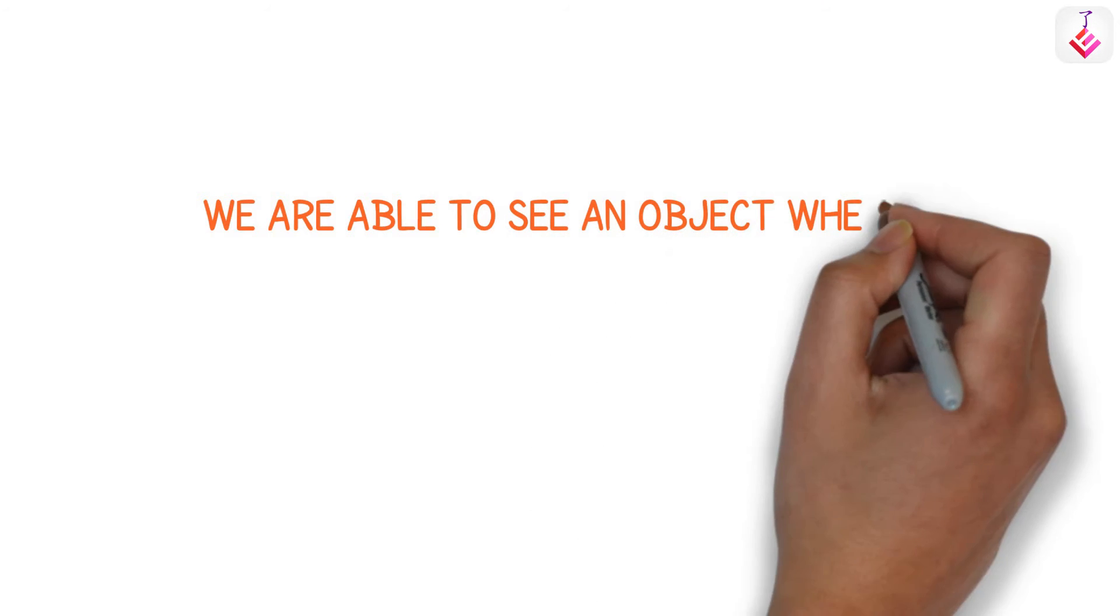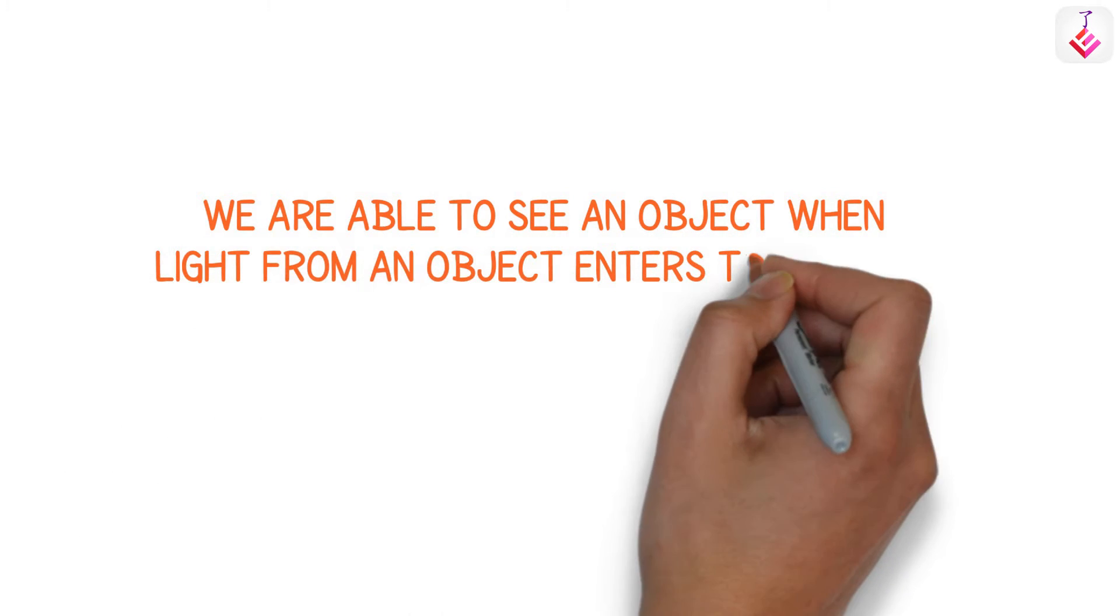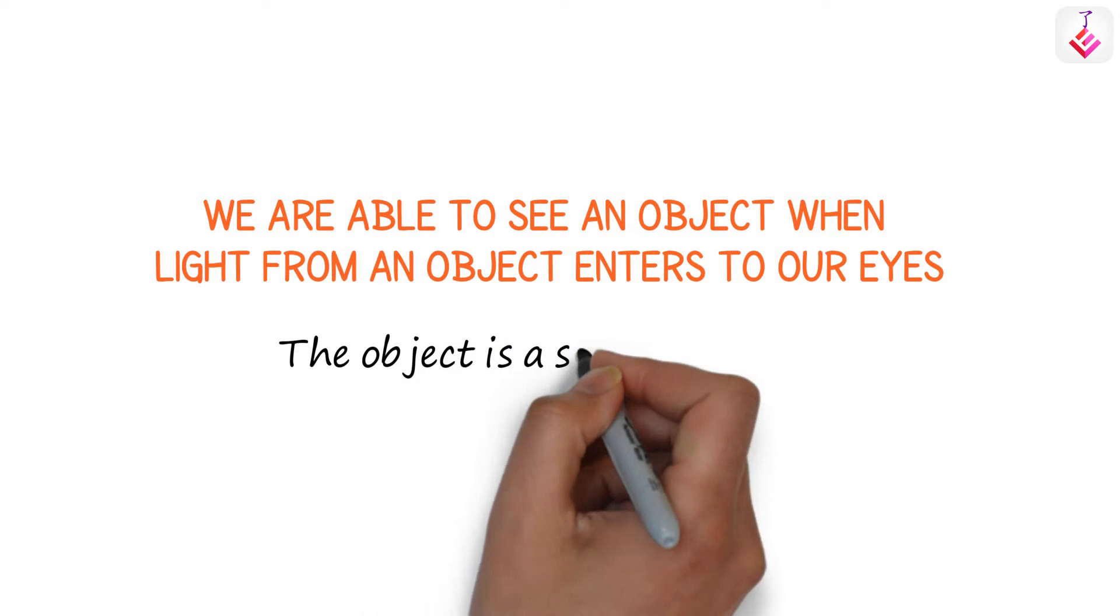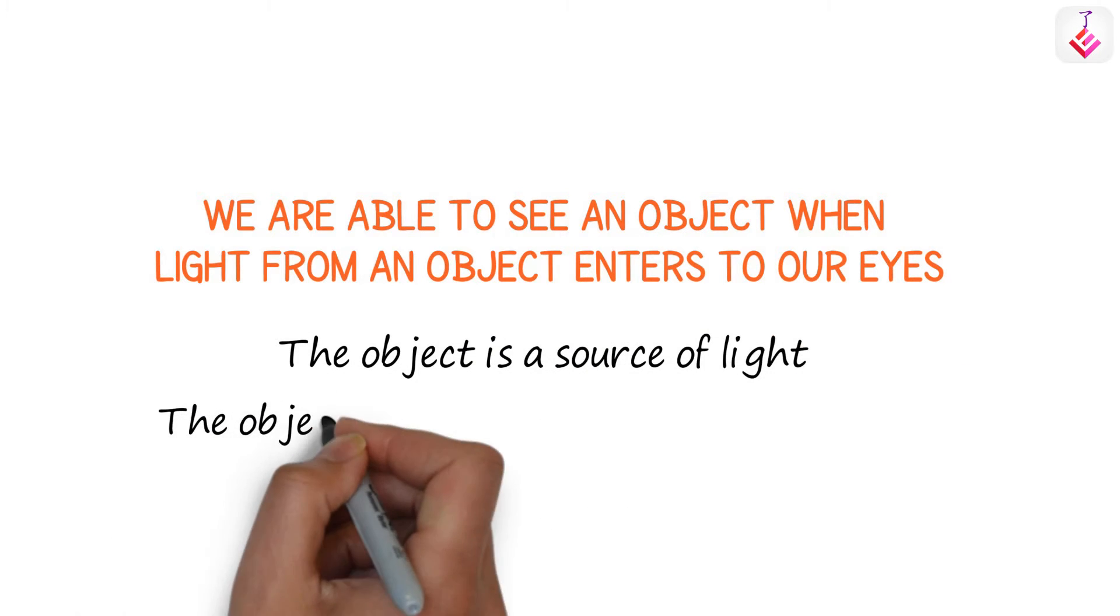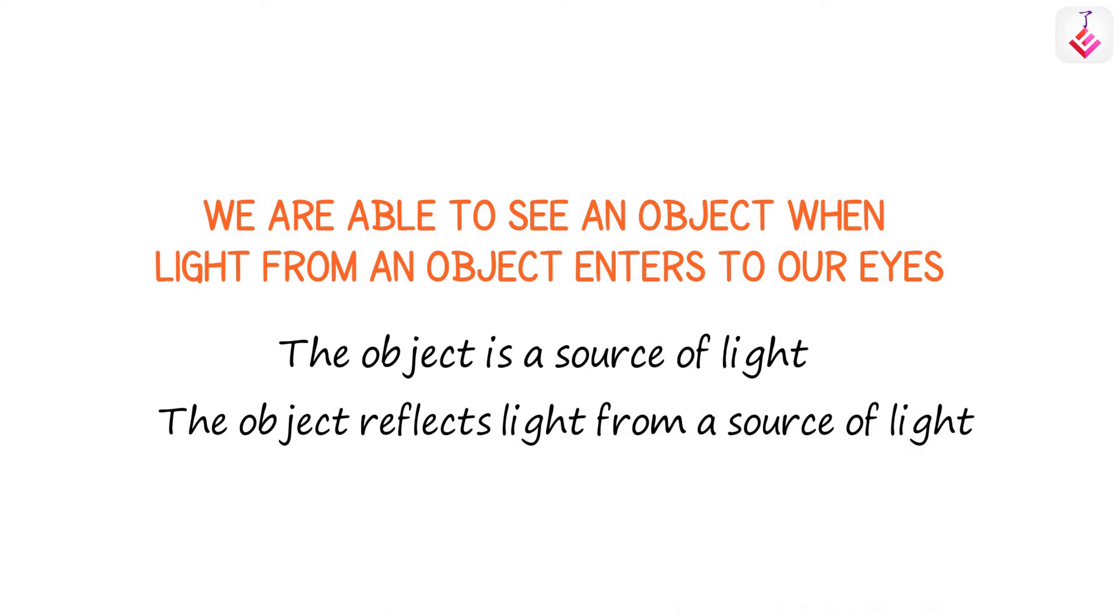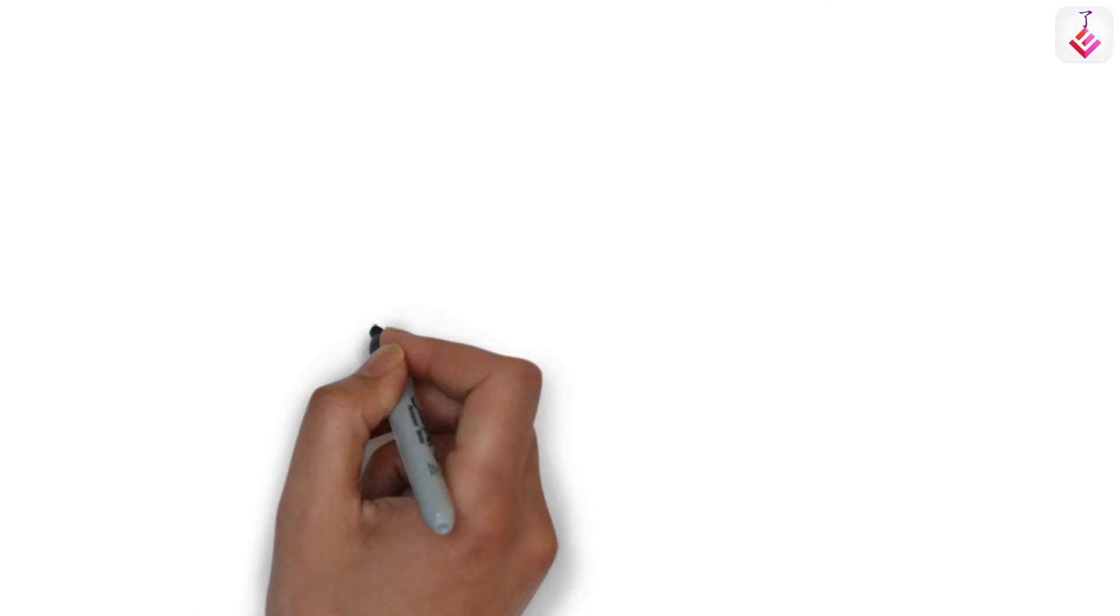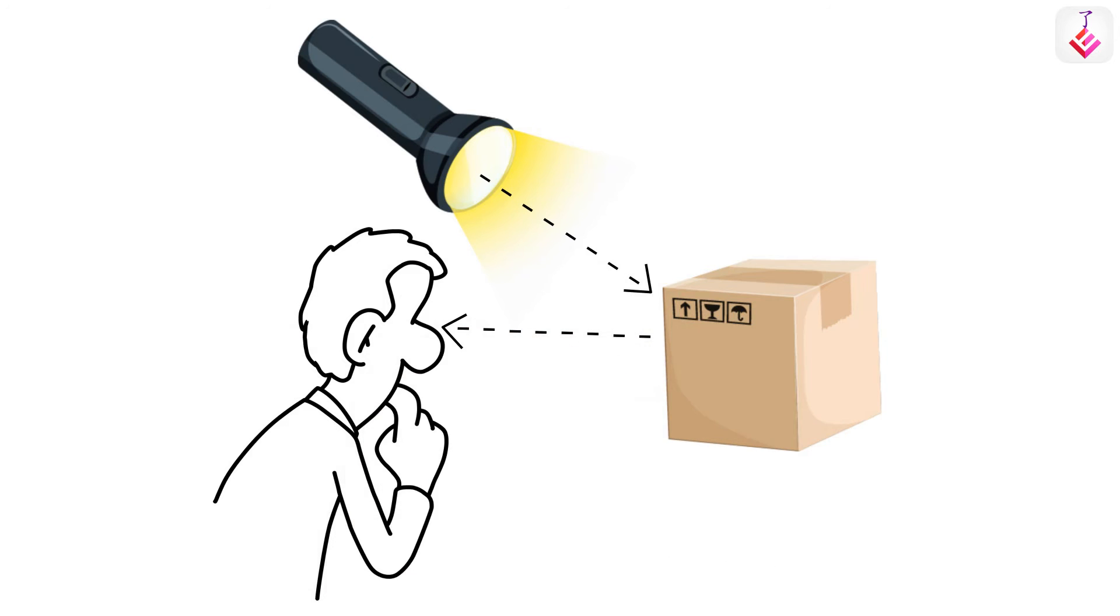We are able to see an object when light from an object enters our eyes. This happens when the object is a source of light or the object reflects light from a source of light. The box can be seen because it reflects the lights from the torch into our eyes.